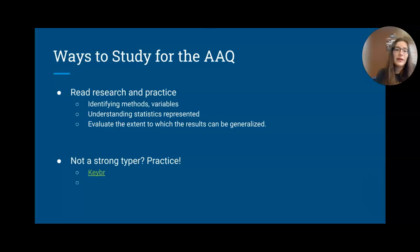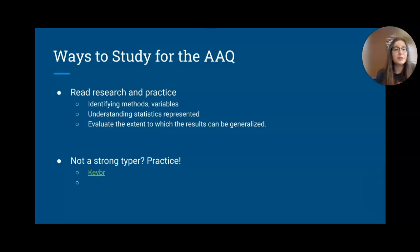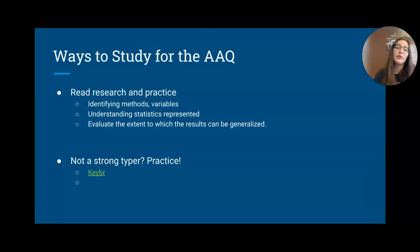Some ways to study for the AAQ: read research studies and practice identifying the method being used, the variables and their operational definitions, and practice reading the statistics before jumping to the results section. Evaluate the extent to which results can be generalized, and practice predicting limitations before reading them. Since this is an online format, if you're not a strong typist, please practice typing — it is a skill you'll need on the AP test.